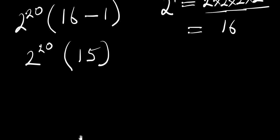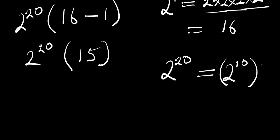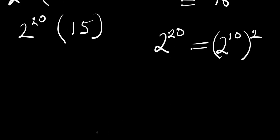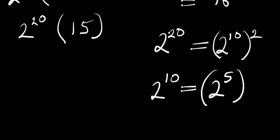Now we need to find the value of 2^20. We can write 2^20 as 2^10 raised to the power of 2. And 2^10 can be written as 2^5 raised to the power of 2, since 5 times 2 equals 10.